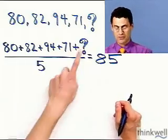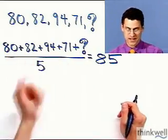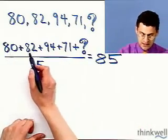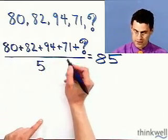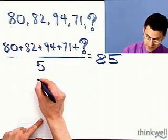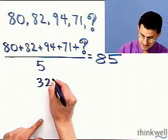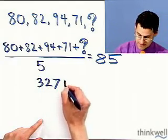Okay, so what do I do? I want to solve for question mark. Well, first of all, these numbers I can add up. If you add them up - if you add 80 and 82, that's 162, and you add 94 and 71 - I think you see 327, and then I have that question mark.